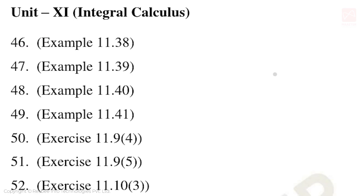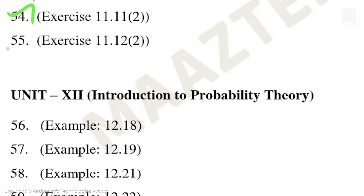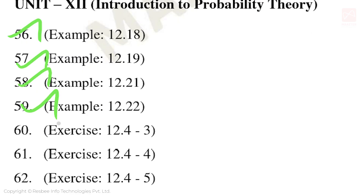Unit 11 five-mark questions: Examples 11.38, 11.39, 11.40, and 11.41. Exercise 11.9 fourth and fifth sum. Exercise 11.10 third sum. Exercise 11.11 first and second sum. Exercise 11.12 second sum. Unit 12: Examples 12.18, 12.19, 12.21, 12.22. Exercise 12.4 third, fourth, and fifth sum.